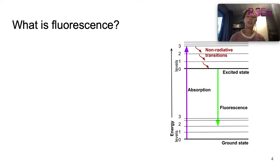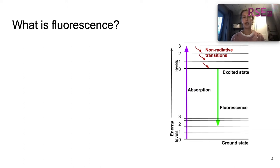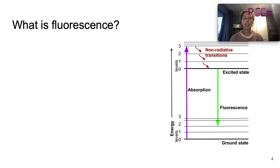This is why we represent the arrow in purple. So assume we absorb UV light. Then this molecule will go to an excited state. And in this excited state, it will slowly fall back to the zeroth level by non-radiative transitions. Non-radiative transitions could be vibrations or internal conversions, but in each case, these are transitions that do not emit light. If the molecule then falls back from the excited state to the ground state, fluorescence will happen.